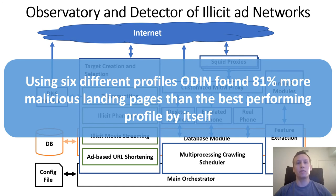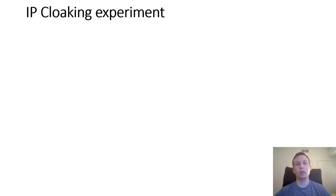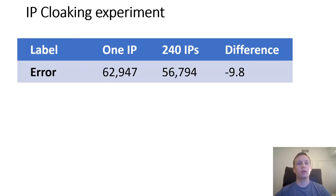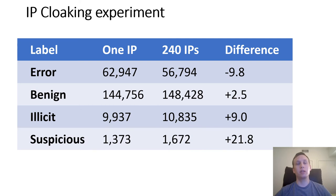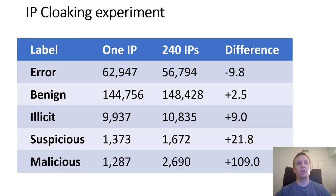Using six different profiles, Odin discovers 81% more malicious landing pages than the best-performing single profile alone. To better understand IP-based cloaking, we ran two parallel experiments studying the same URLs during the same time window — one using only one IP address and the other using 240 IP addresses. The number of error pages decreased with 240 IP addresses, pages in other categories increased, and most importantly, the number of malicious pages discovered more than doubled.